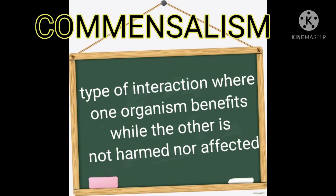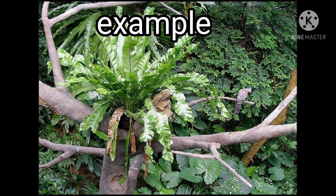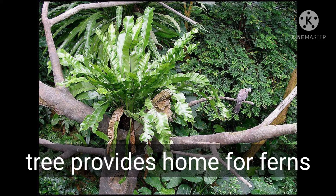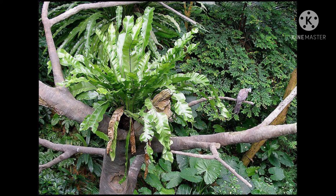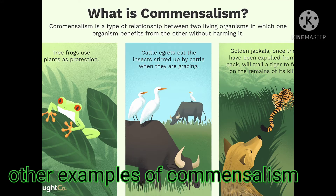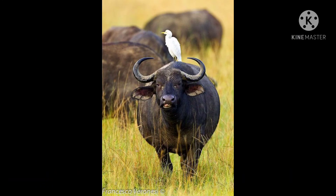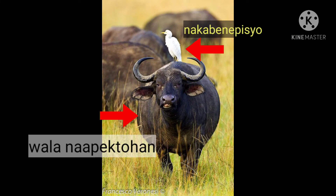Commensalism is the type of interaction where one organism benefits while the other is not harmed nor affected. Example: a tree and ferns. The tree provides a home for ferns, and ferns beautify gardens, although the tree is not harmed or affected by the ferns' presence. In commensalism, one organism benefits while the other neither benefits nor is harmed.